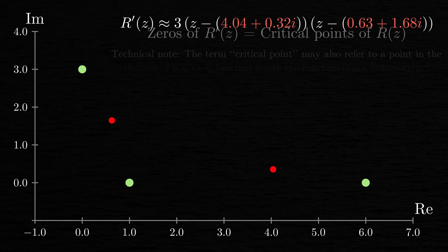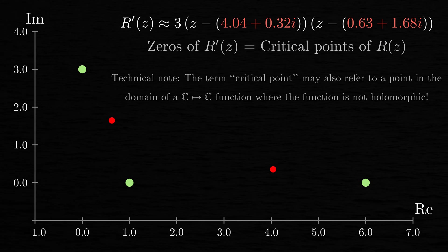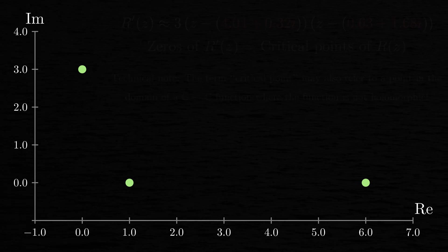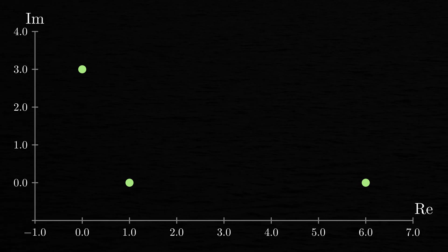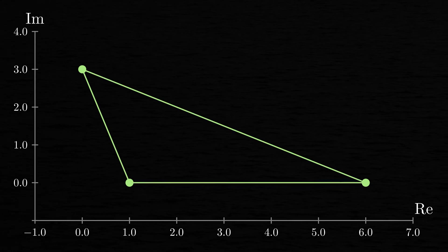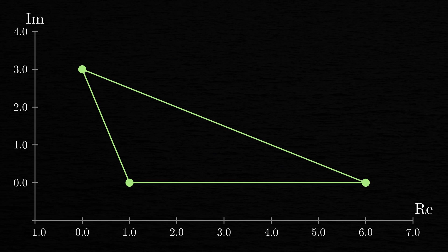It turns out that there's quite an unexpected geometric meaning behind these two zeros of r', which are, by the way, also called the critical points of r. To see this, let's begin by hiding the zeros of r' and some of the text to reduce this clutter. Now let's draw the triangle that has the three zeros of r as its vertices.